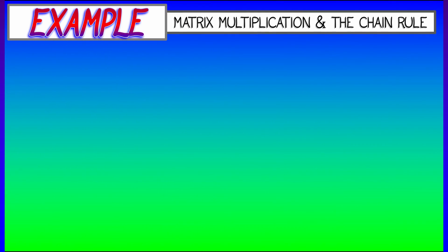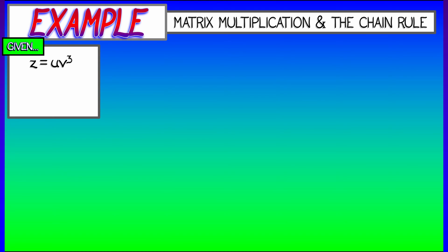Let's practice with an example where we've got a lot of variables going on. Let's say that z is u times v cubed, but u and v both depend on variables s and t. So u is s squared minus t squared, and v is s times t.